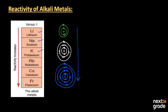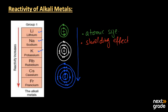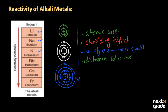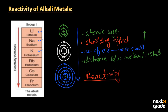When we move from top to bottom in the periodic table, several factors increase: atomic size increases, shielding effect increases, the number of electrons in inner shells increases, and the distance between the nucleus and the valence shell also increases. As all these factors increase going down the group, the reactivity of the alkali metals also increases down the group.